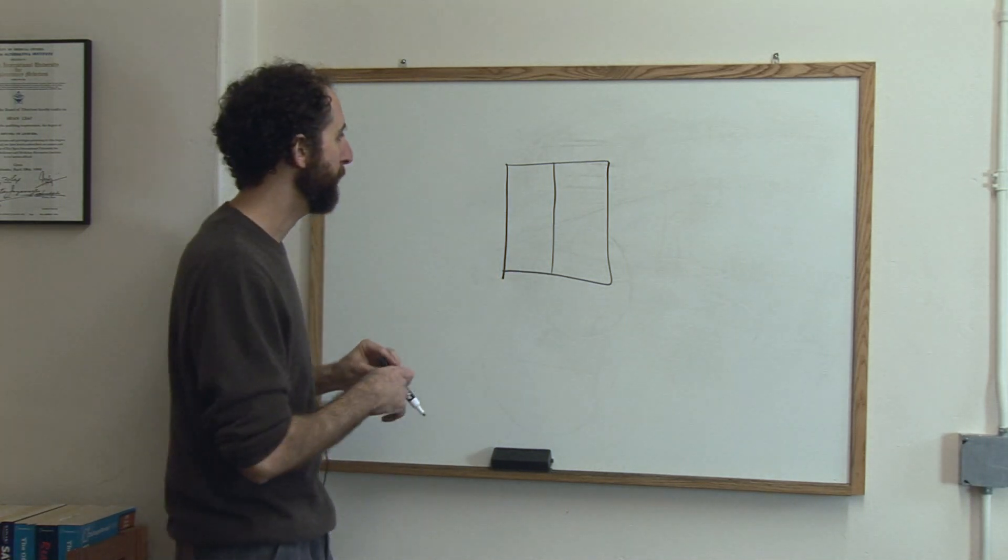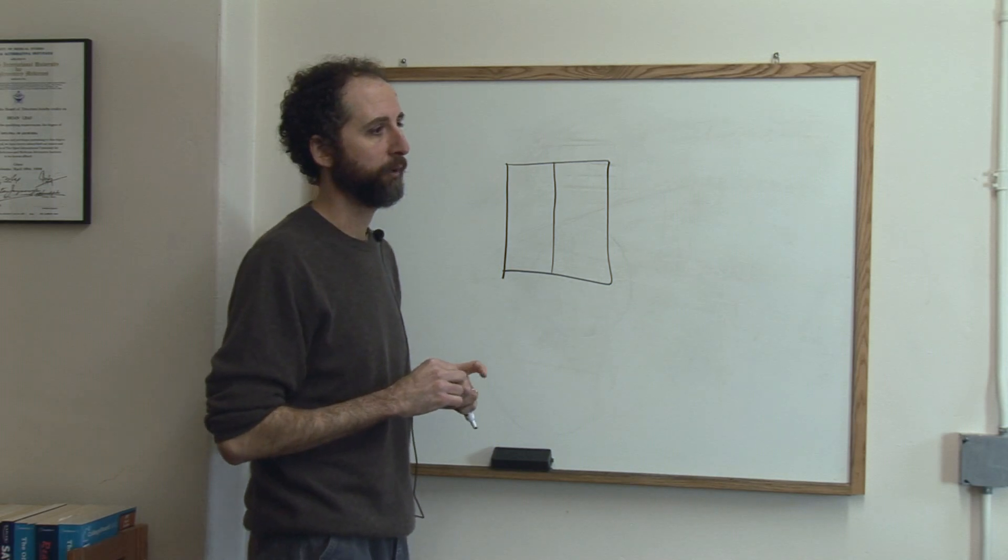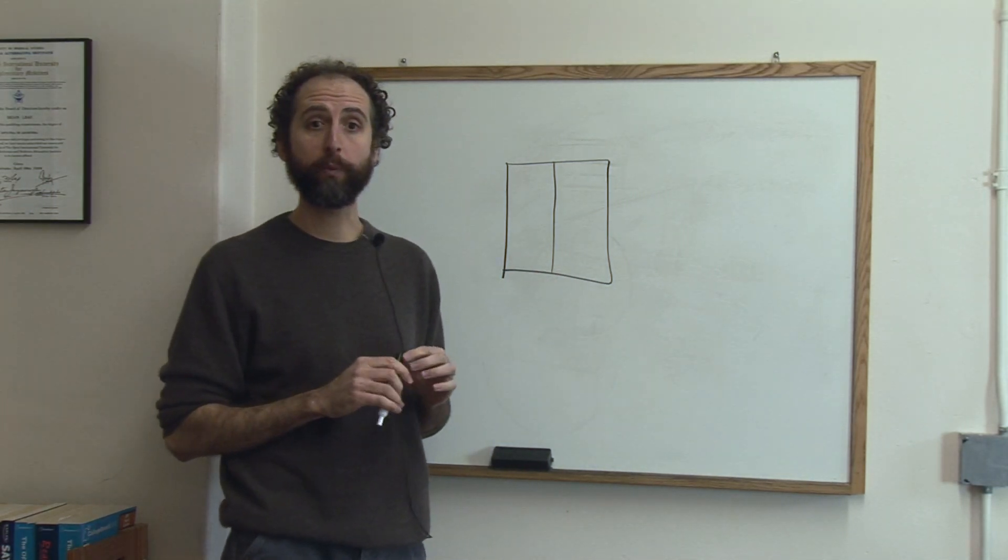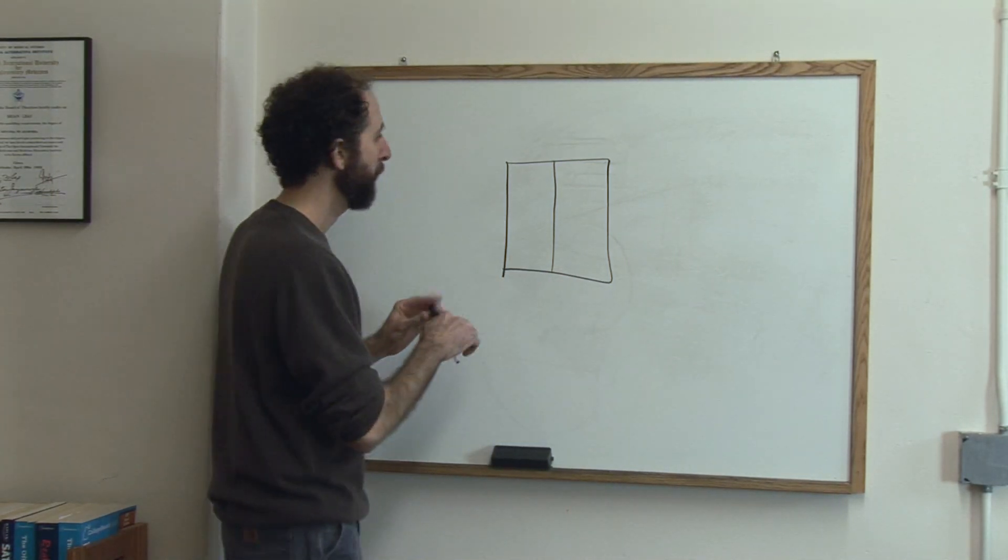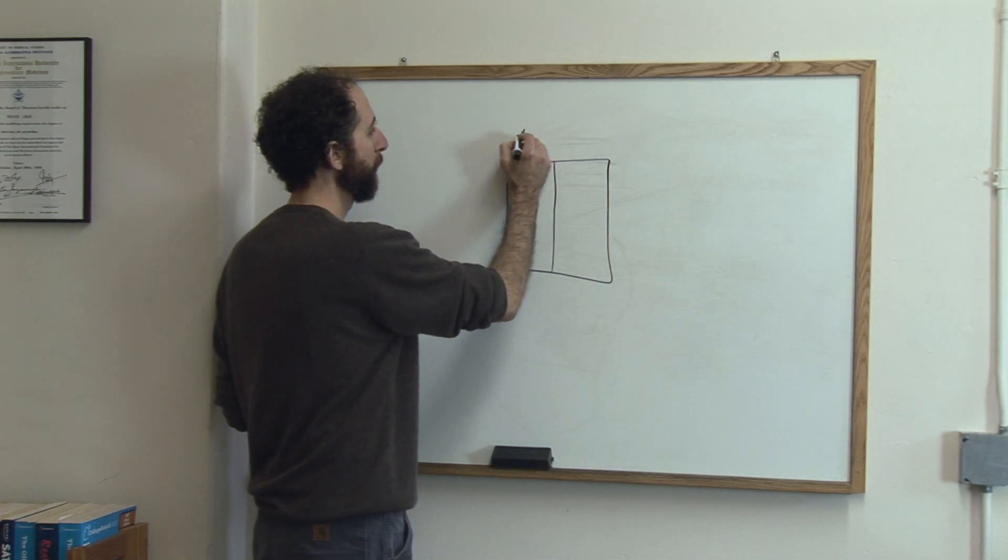So let's say we've got a group of students in a room and we want to know how many siblings they have. So this is number of siblings.